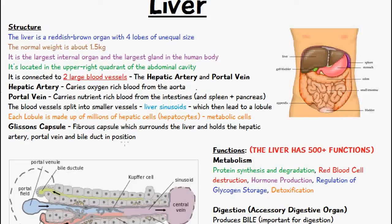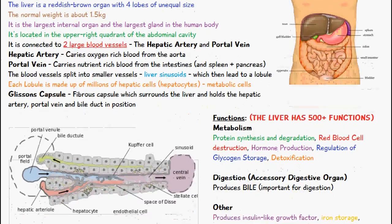The blood vessels split into smaller vessels called liver sinusoids, which then lead to a lobule. Each lobule is made up of millions of hepatic cells called hepatocytes, and these are metabolic cells. We also have something called Glisson's capsule, which is the fibrous capsule that surrounds the liver and holds the hepatic artery, the portal vein, and the bile duct in position.